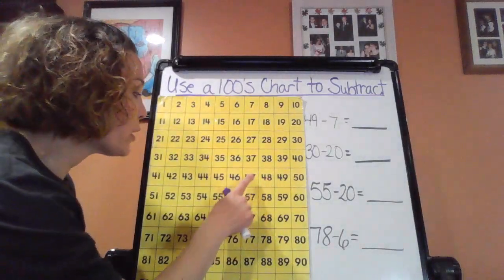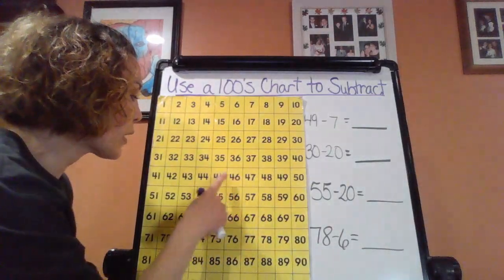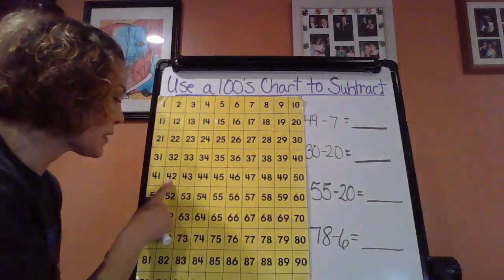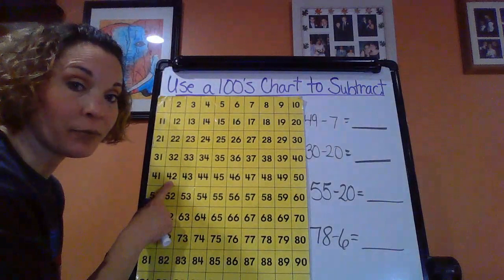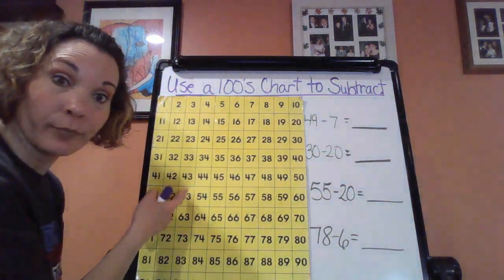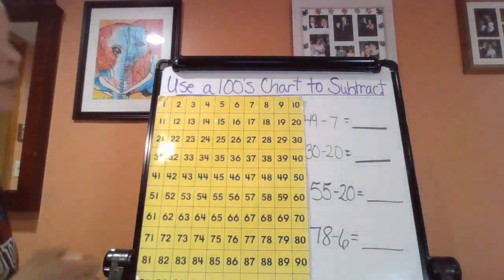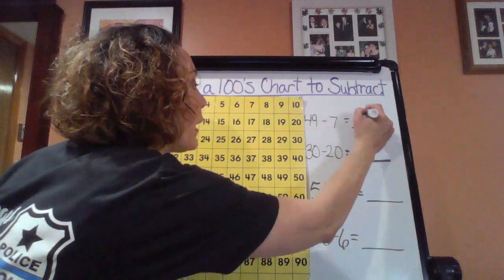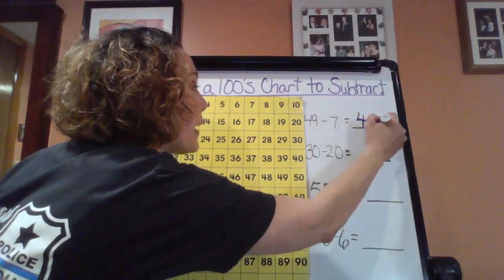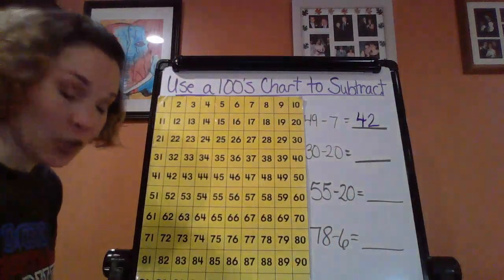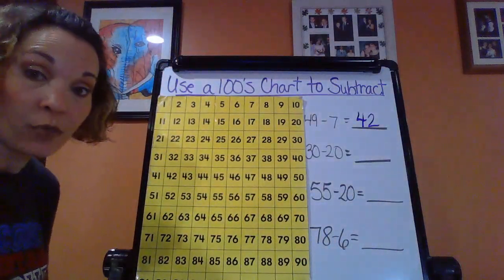So I'm going to start at 49 and count back 7: 1, 2, 3, 4, 5, 6, 7. Where do I end? 42. So therefore, 49 minus 7 is going to give me an answer or a difference of 42.